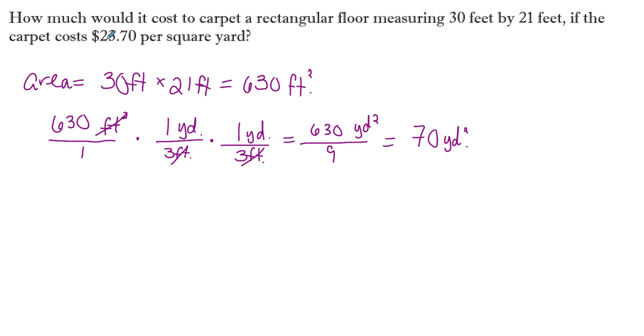And now, since we know that our cost is $23.70 per square yard, to find out the total cost, we're going to multiply. The cost equals 70, because it's the square yards that we need, times $23.70, which comes to be $1,659 in order to carpet this room.